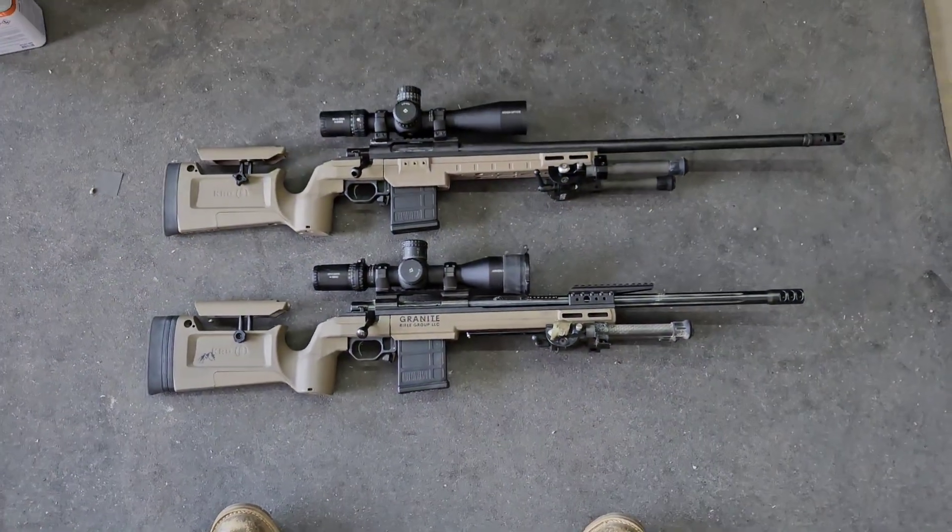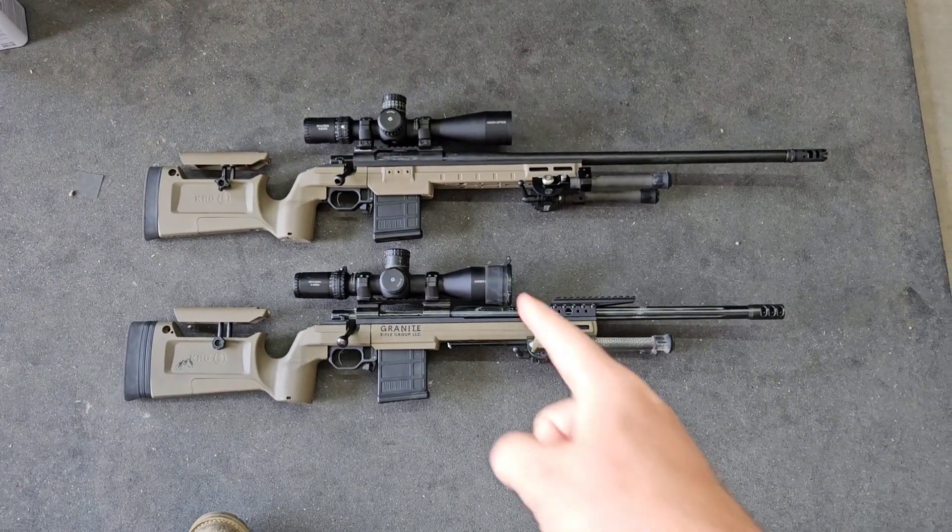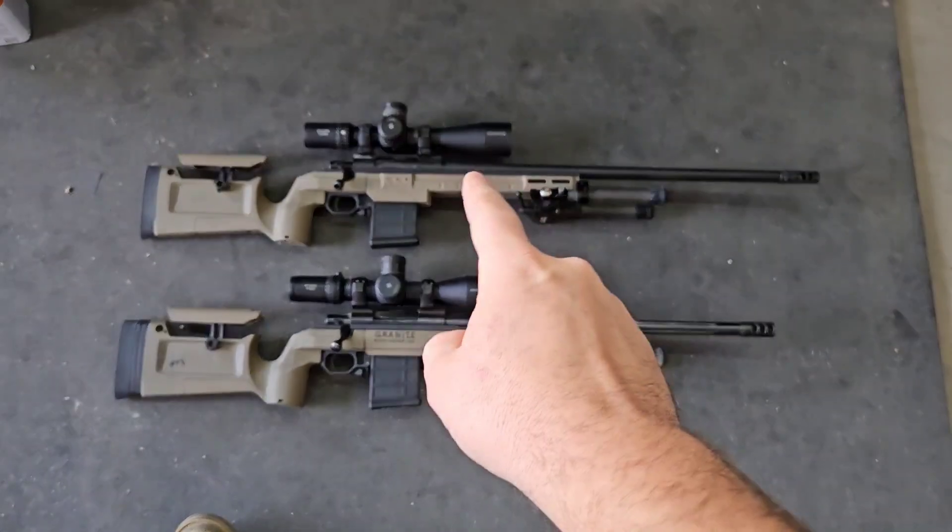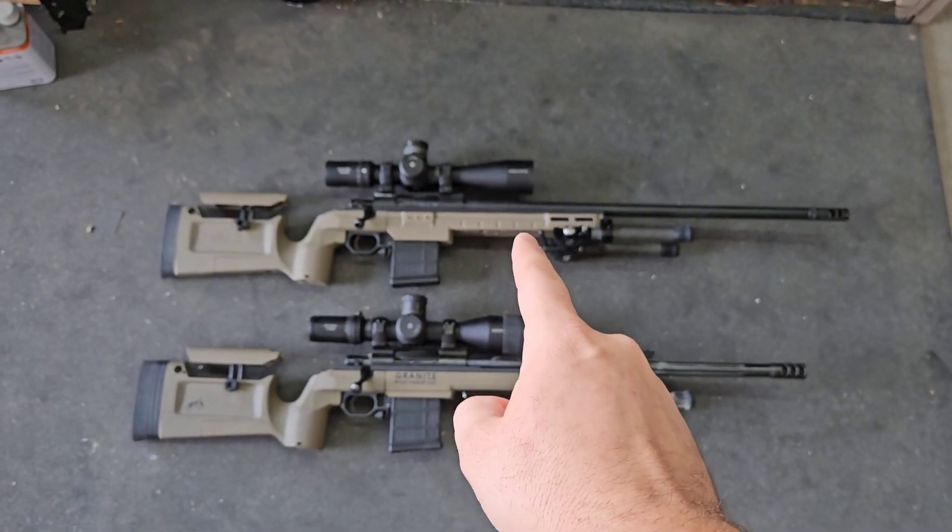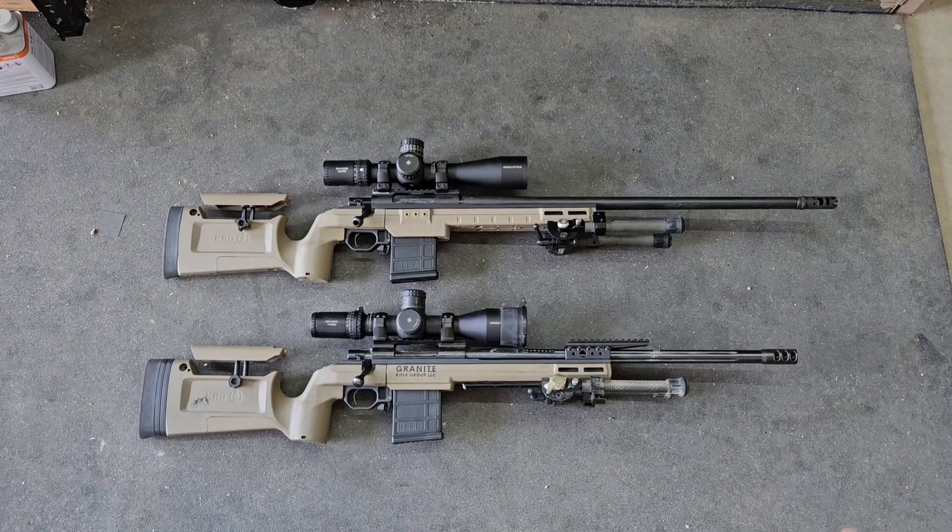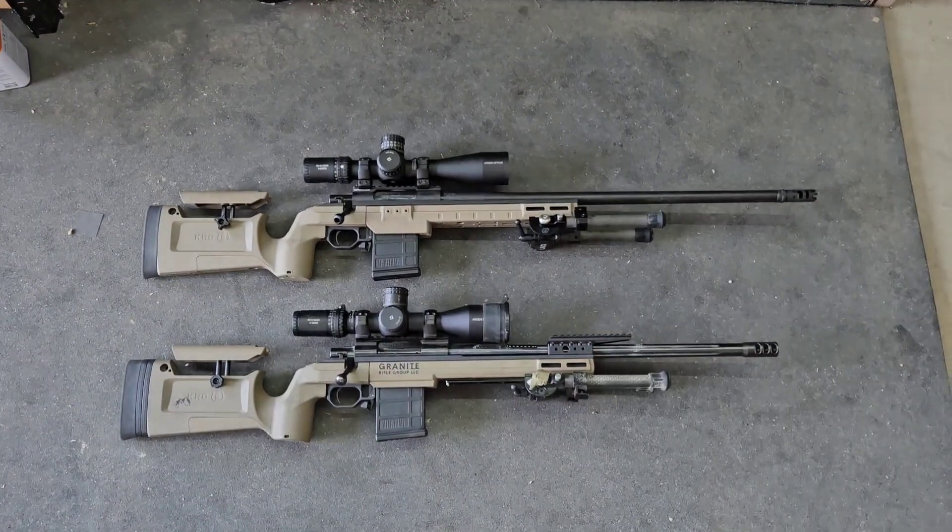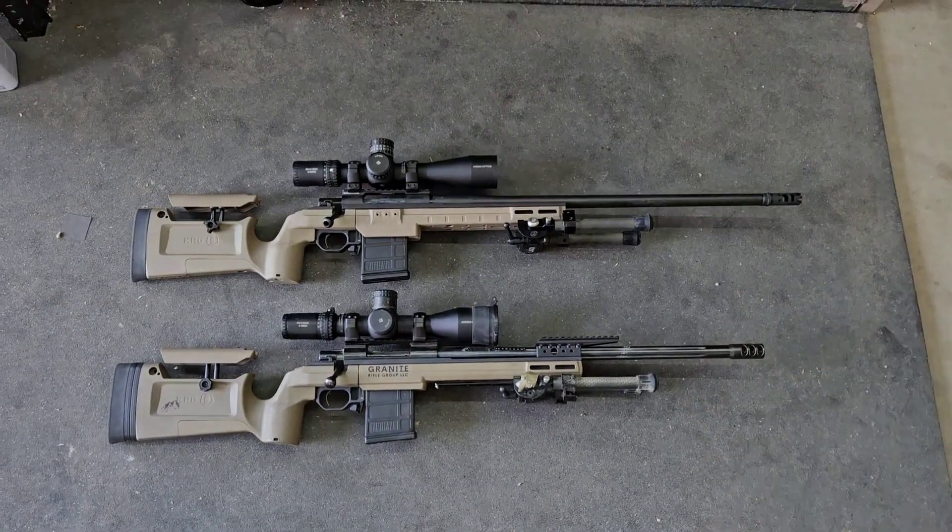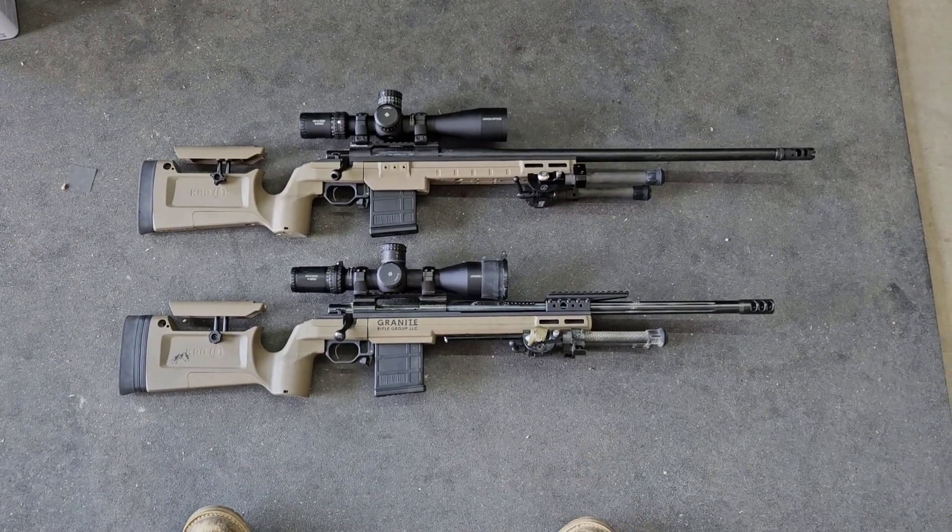Two of pretty much the exact same rifle, both 308 IPRs. This is a customer's gun, so it's going out for QC checks to make sure that the rifle shoots and groups. Then here, this is my personal rifle.